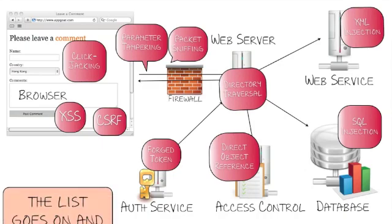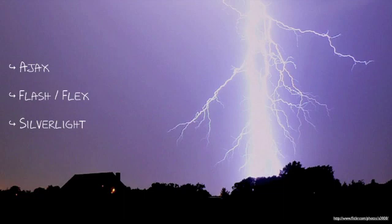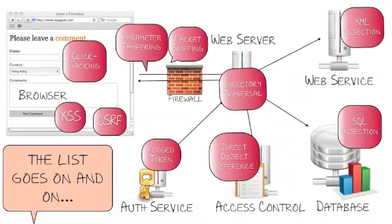On top of that, you throw things like Ajax, Flash, Flex, Silverlight, Java applets, and an assortment of other areas that we'll be getting into later. And you wind up with a pretty large attack surface area — meaning all the different areas that can be exploited by the attacker to misuse your application. What you see up here is just a fraction of the total possible security issues that can plague a web application, and attackers are coming up with new and innovative ways to exploit web applications all the time. So it really is an ongoing challenge to build secure web applications.